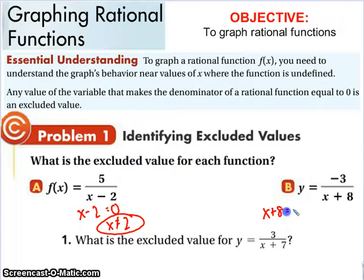Here, x plus 8 can't be 0, so x cannot be equal to negative 8. Pretty straightforward. We take just the denominator. We don't care about anything else. We care about just the denominator. Excluded value for that? Yeah, negative 7.